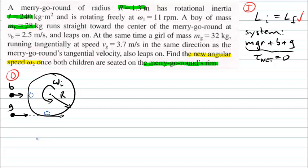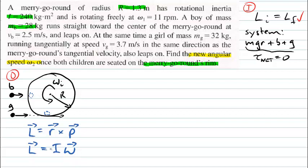When we calculate the angular momentum of the different components in this system, we have a couple of ways we can do that. One way of writing the angular momentum as a vector is the cross product of the location and the linear momentum — useful when we have a point particle with a definite location and momentum. An alternative way is to use the rotational inertia multiplied by the angular velocity, which is more useful for an extended object whose rotational inertia we can calculate or have been given.